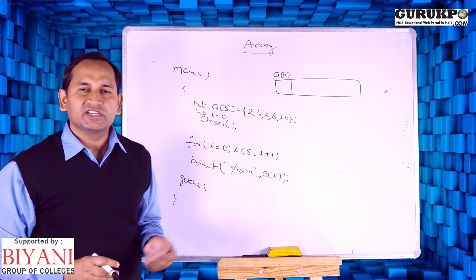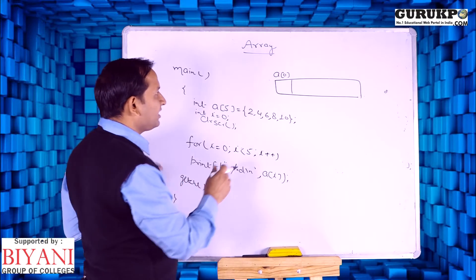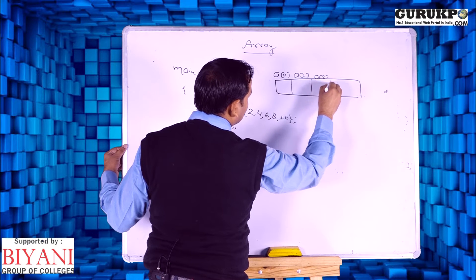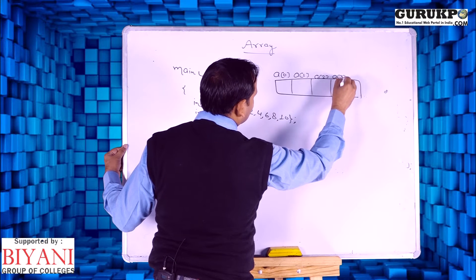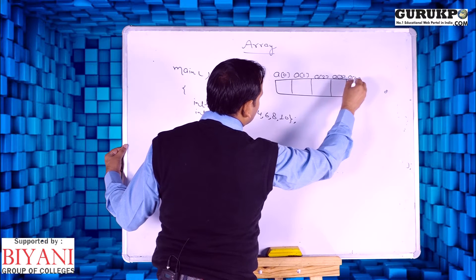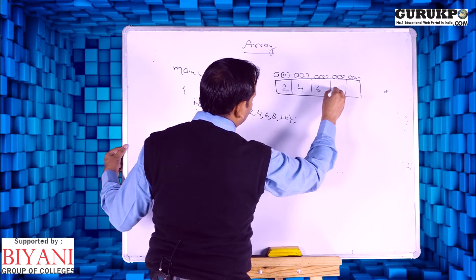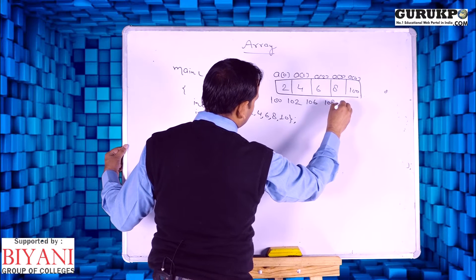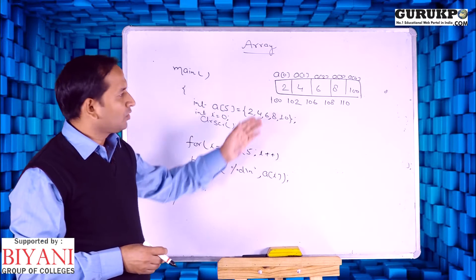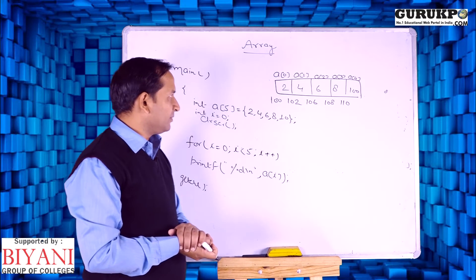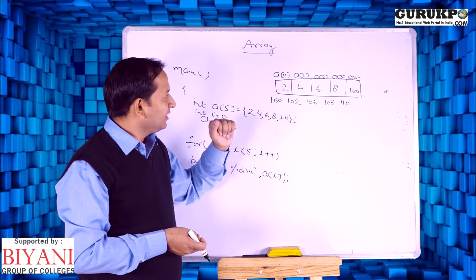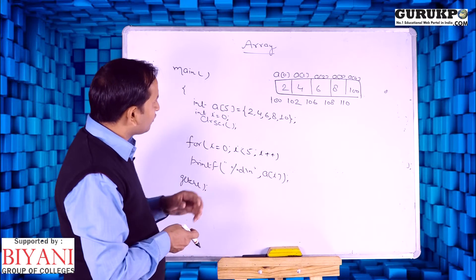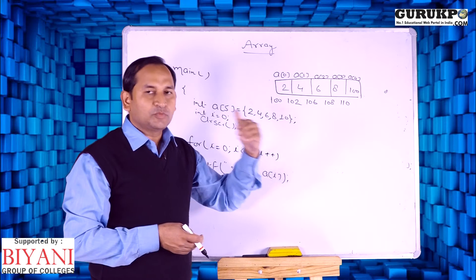The indexing of an array always starts from 0 onwards to n-1, where n is the number of elements. This is the memory map of the integer array which stores 5 elements. The address of the first element 'a' is 100. This is also called the base address. Base address is a popular term in computer science, and we can easily access any element in the list using the base address.